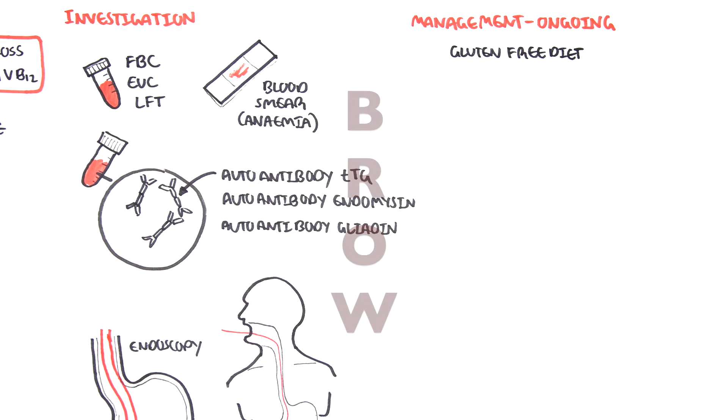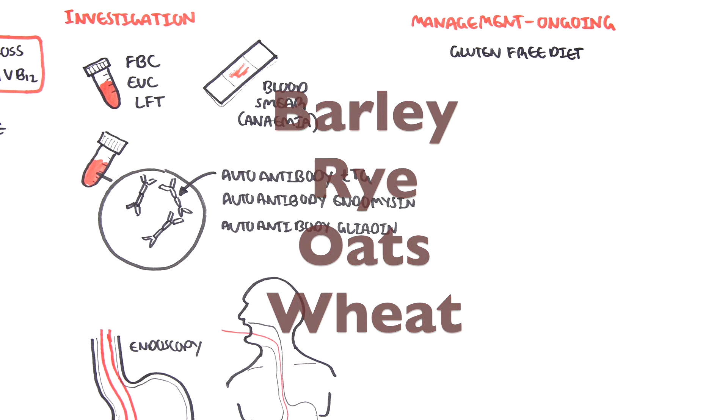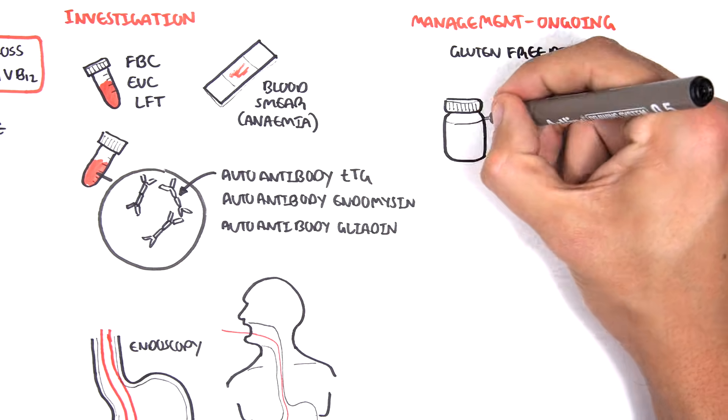Gluten-containing foods can be remembered with the acronym BROW: B as in barley, R as in rye, O as in oats, and W as in wheat. These four things contain a lot of gluten and therefore should be avoided.